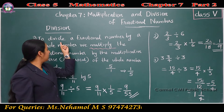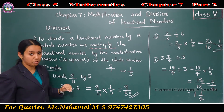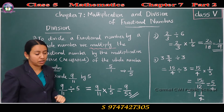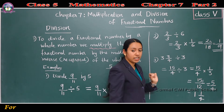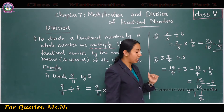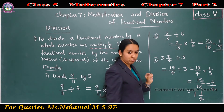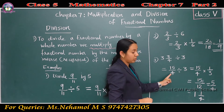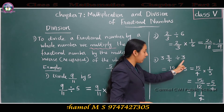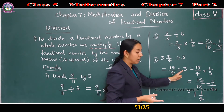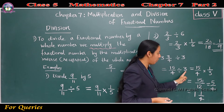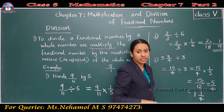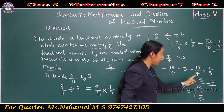Third example: 3¾ divided by 3. This is a mixed fraction, so we convert to an improper fraction first. 3¾ means 4 threes are 12, plus 3 is 15, giving 15/4. So 15/4 divided by 3. To divide, multiply by the reciprocal of 3, which is 1/3. So 15/4 into 1/3 equals 15 into 1, divided by 4 into 3, giving 15/12.